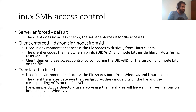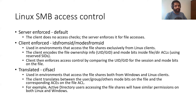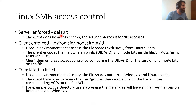The Linux SMB client has the task of translating between the Linux world of access control — mode bits and UID/GID — and the SMB world of access control — ACLs and SIDs. This is done in three ways, supporting three different use cases: server-enforced access control (the default), client-enforced access control, and the translated approach, which is the SIF cycle.